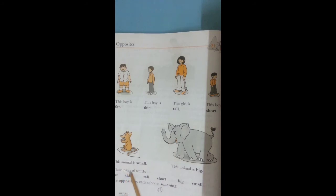Look at this picture. This animal is small. This animal is big. The opposite word of small is big. These pairs of words - fat, thin, tall, short, big, small - are opposites to each other in meaning. Words that are opposites have completely opposite meanings. Like fat means very fat, thin means very thin, tall means very tall, short means very short, small means small, and big means very big.